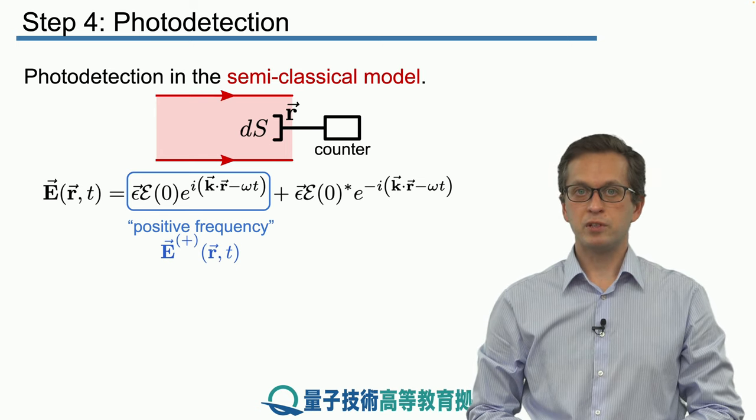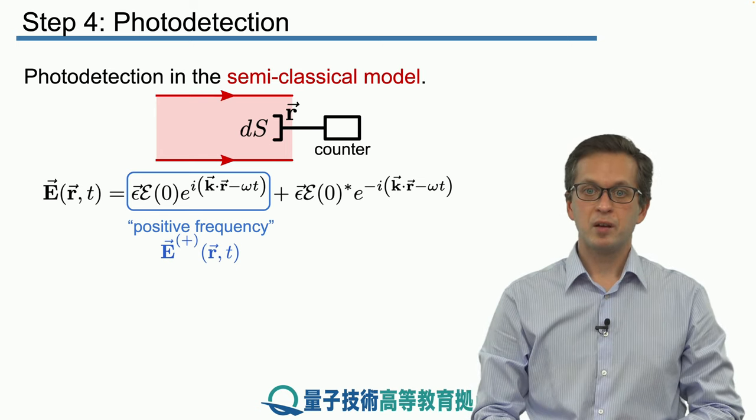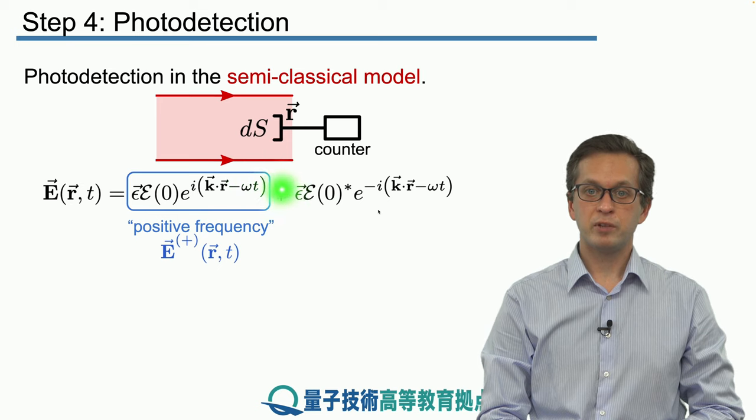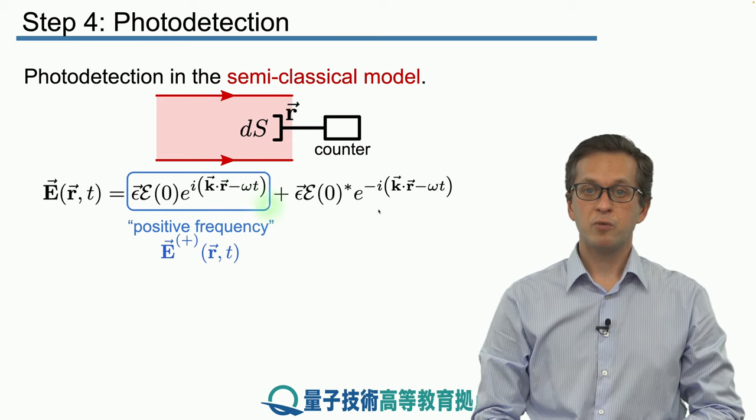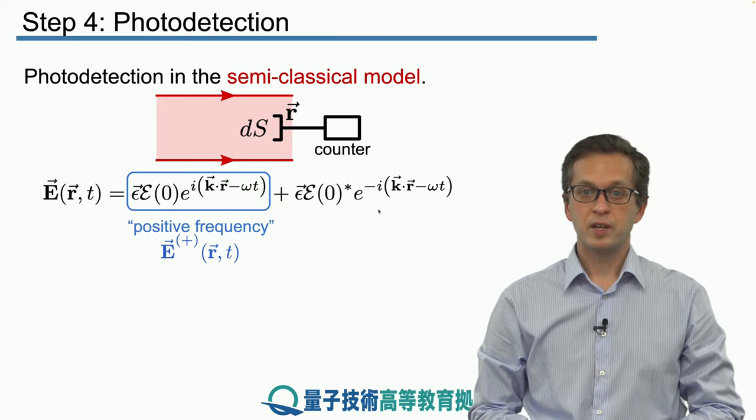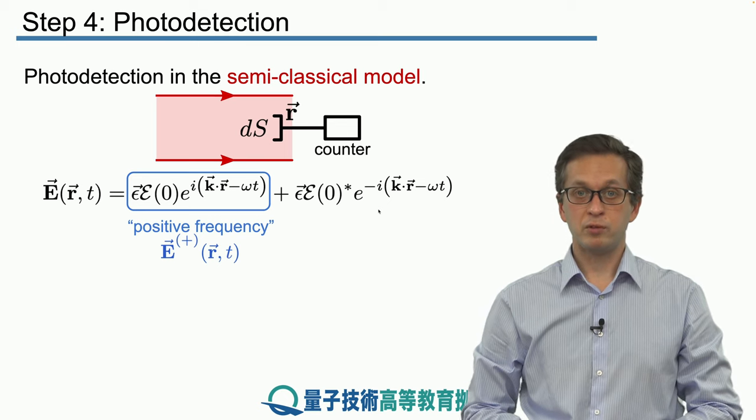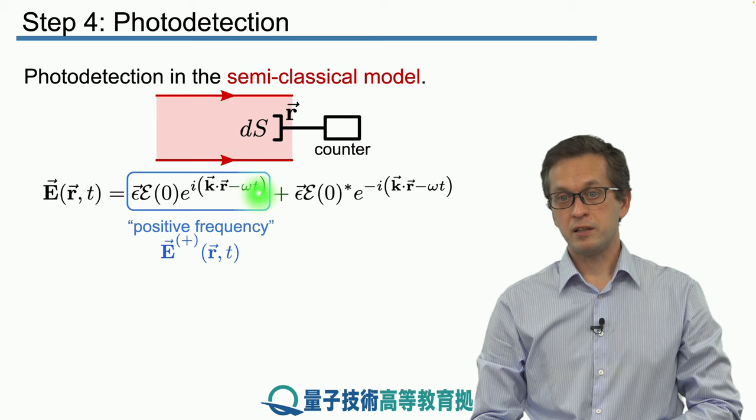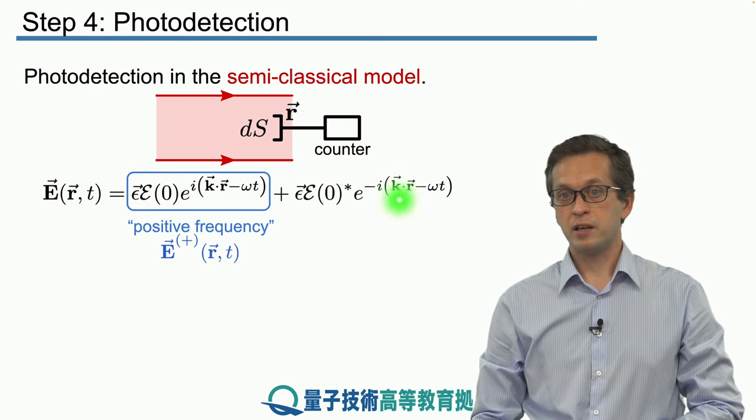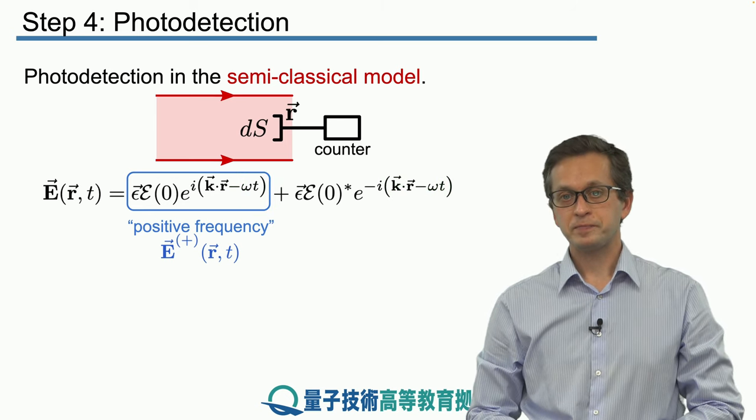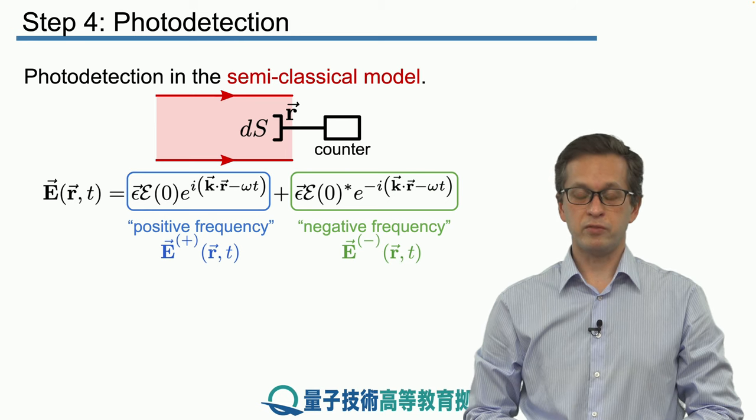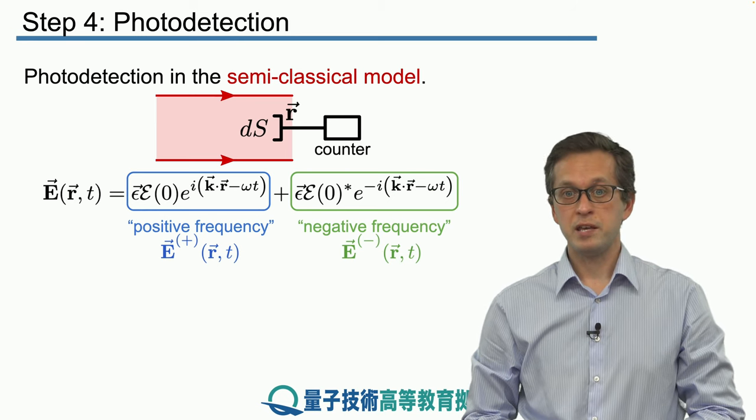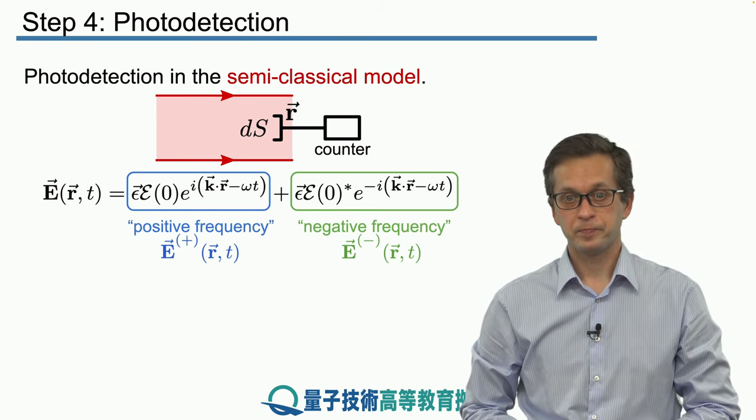The first term over here is referred to as the positive frequency term and denoted by E^+. This is a rather confusing notation, but it's standard. Particularly if you look at the term in the exponential corresponding to the frequency, we see that it's in fact negative. But I'm not going to change it. I'm going to follow the standard textbook notation. And this means that the other term, oscillating at plus i omega t, is known as the negative frequency term denoted by E^-.